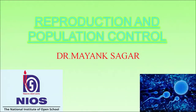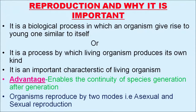Welcome to the NIOS senior secondary biology course. I am Dr. Mayank Sagar and today we are going to discuss about reproduction and population control. First of all, what is reproduction and why it is important? It is a biological process in which an organism gives rise to young ones similar to itself, or it is a process by which a living organism produces its own kind. It is a very important characteristic of living organisms. The advantage of reproduction is that it enables the continuity of species generation after generation.